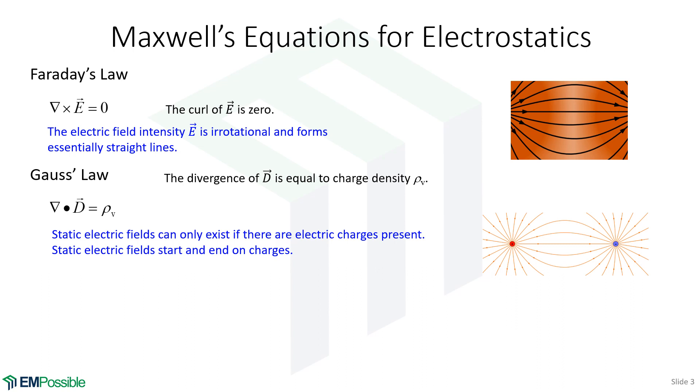So if we move on to Gauss's law, what we see is that the divergence of the electric flux D is proportional to the charge density rho V.